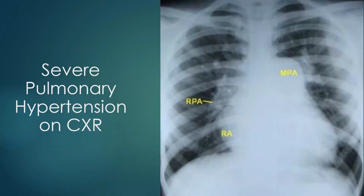This X-ray also shows a prominent right atrial contour, indicating right atrial dilatation as a consequence of pulmonary hypertension and right ventricular hypertrophy.